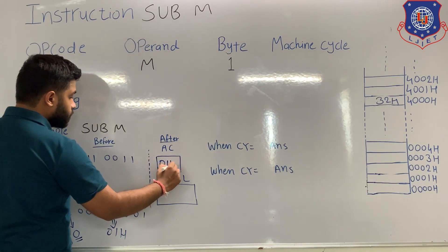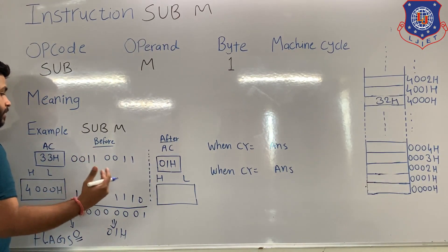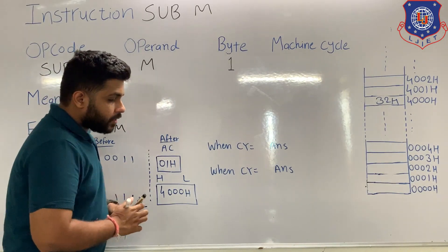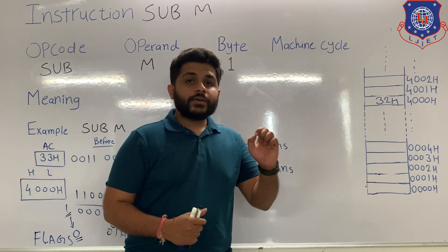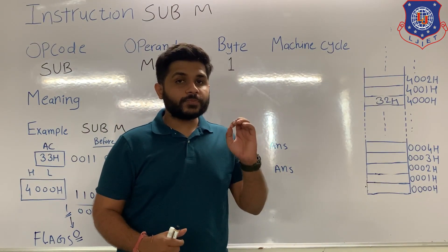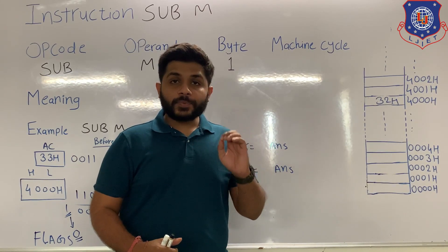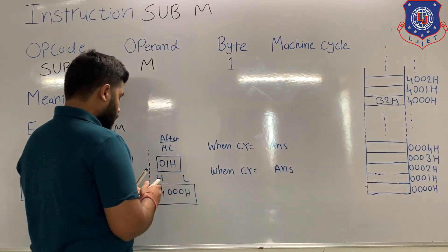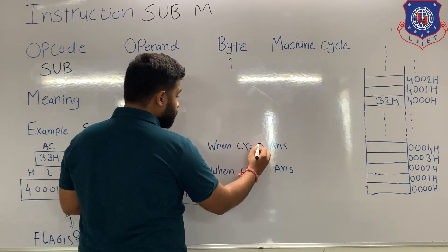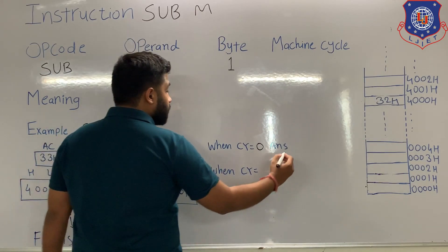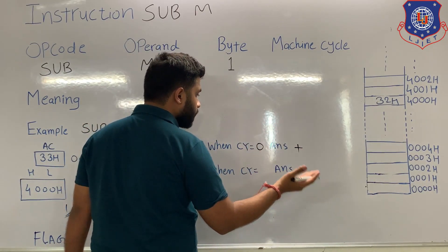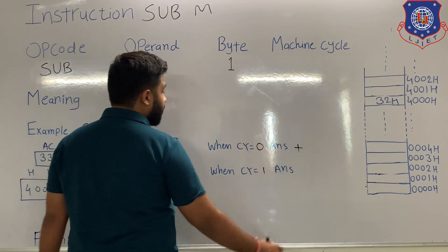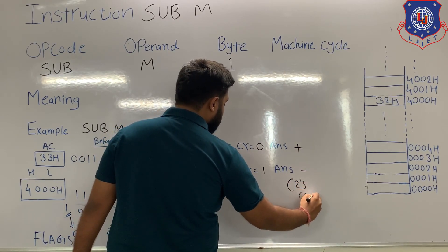After execution, 01H is stored in the accumulator. The content of the HL pair remains unchanged at 4000H. After the subtract instruction, if carry = 0, the answer is positive and in original form. If carry = 1 after the subtract instruction, the answer is negative and in 2's complement form.